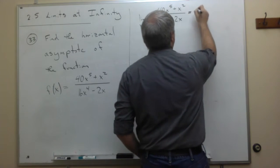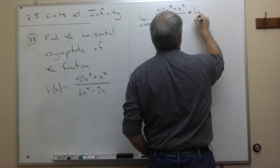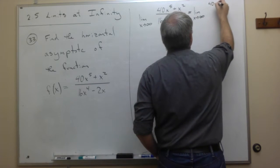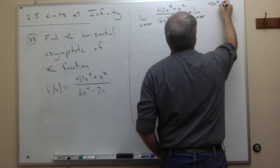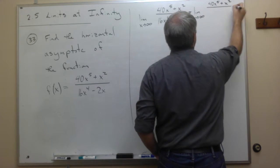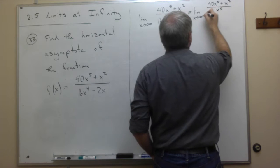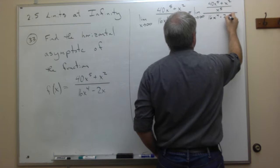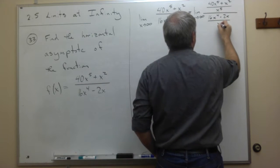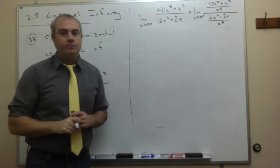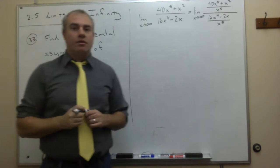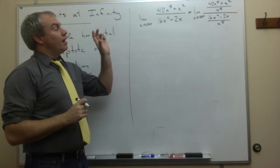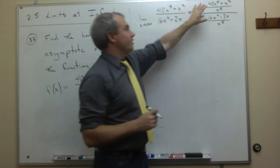If I do, I get the following. This is the limit as x goes to infinity of 40x to the fifth plus x squared divided by x to the fifth divided by 16x to the fourth minus 2x divided by x to the fifth. So now what we would like to do is let's simplify this a little bit.